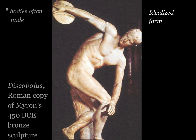Looking at these nude forms, something else we notice is that these are idealized forms. If you look at this athlete, he is very obviously an athlete — the muscles in his arm and his chest are very well developed, and you can see the muscles tensing in his legs as well. This is an idealized version of what a male body should look like.